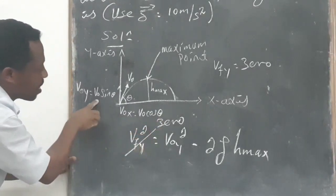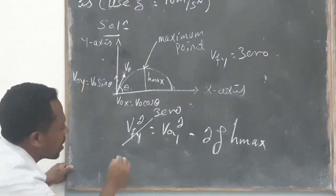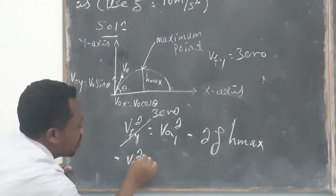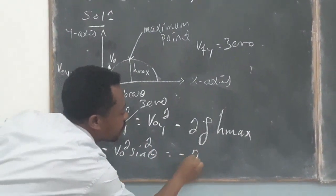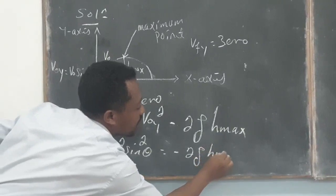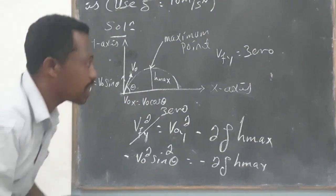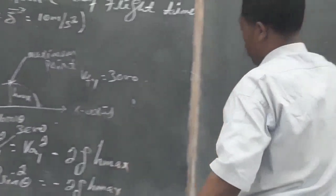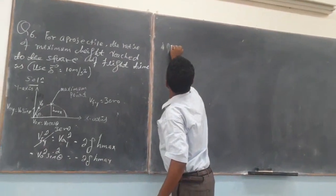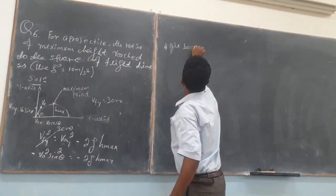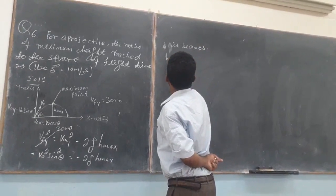Then, substituting V_not_y as V_not·sinθ, we get: 0 = (V₀·sinθ)² − 2g·H_max. Taking the term to the left side, it becomes V₀²·sin²θ = 2g·H_max. Dividing both sides by 2g, H_max = V₀²·sin²θ / (2g).